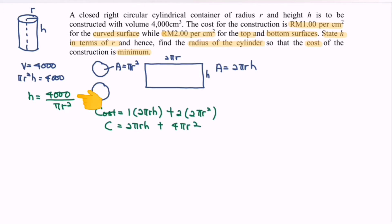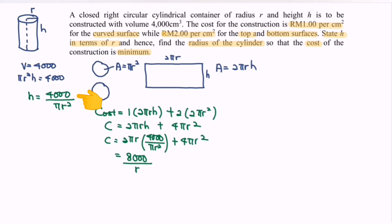Substituting h = 4000/(πr²) into the cost function: C = 2πr × (4000/(πr²)) + 4πr², which simplifies to C = 8000/r + 4πr². Rewriting: C = 8000r⁻¹ + 4πr².